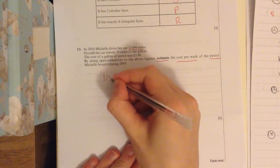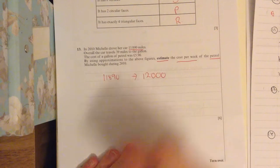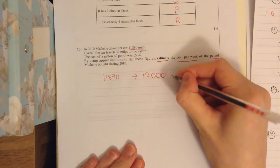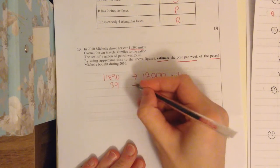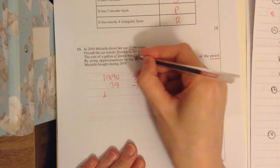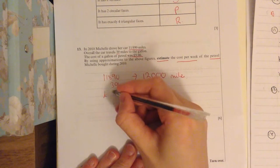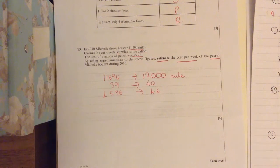First thing I want to do is estimate all of these parts. So estimating, that's about 12,000 miles. 39 miles to the gallon is going to be estimated at about 40. And we've got 5.96. That's going to be estimated at around 6 pounds. That's the first thing you should do.